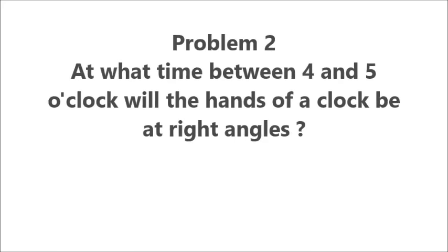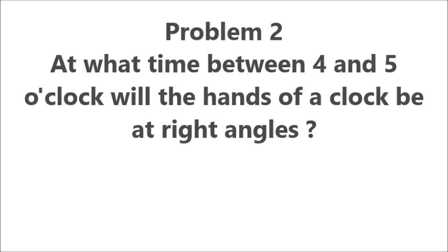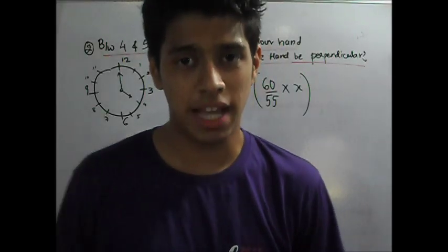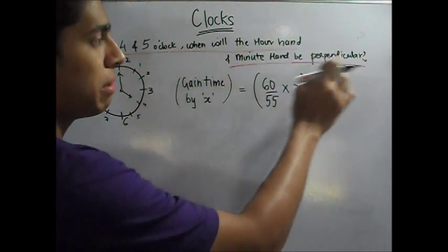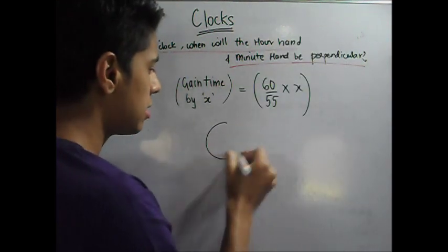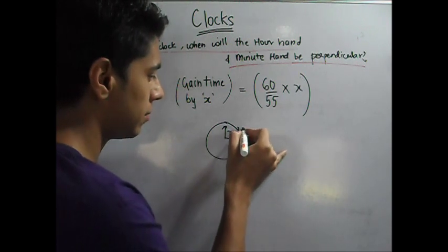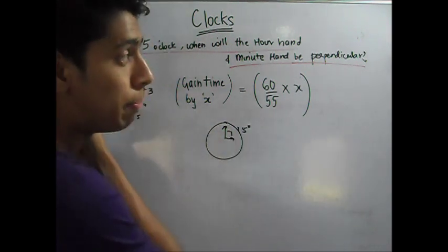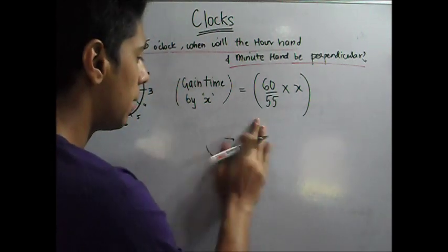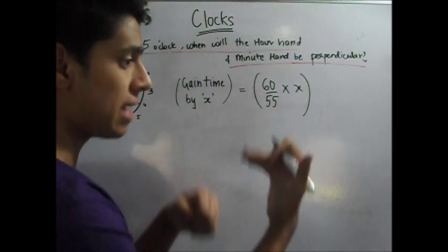Problem 2: At what time between 4 and 5 o'clock will the hands of a clock be at right angles? For the second problem, between 4 and 5 o'clock, when will the hour hand and the minute hand be perpendicular? Perpendicular is basically when the minute hand and the hour hand are 15 minutes apart — only then will it make an L or a perpendicular angle. Obviously this will happen twice: once when the minute hand is behind the hour hand, and once when it is ahead.